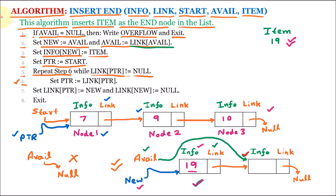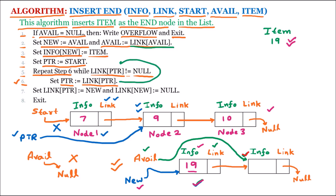So line number 6 executes: set ptr equal to link of ptr. We know that the link portion has the address of the next node, so ptr is going to have the address of the next node and the previous value will be discarded. It is a loop. It will go back and again check whether link of ptr is not equal to null. Now ptr is pointing to node number 2, and the link is having the address of the next node which is not null, so the condition is true and line number 6 will execute again.